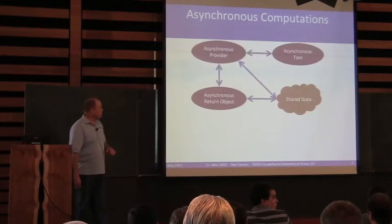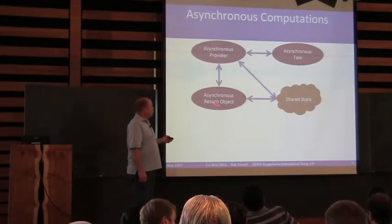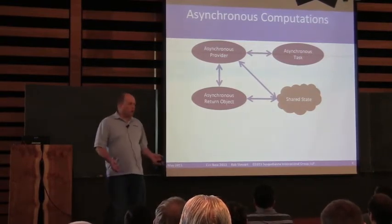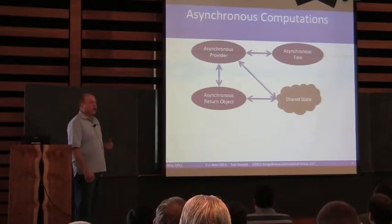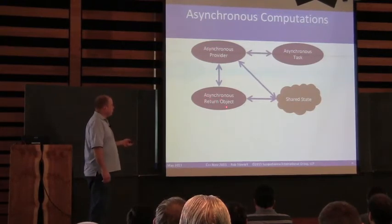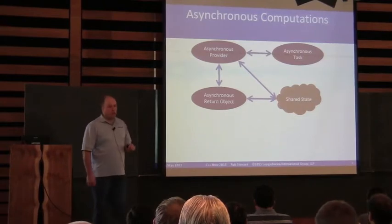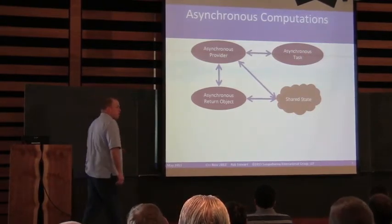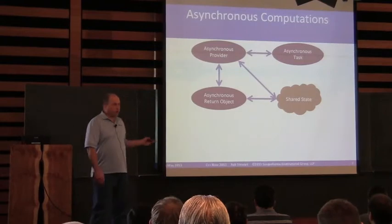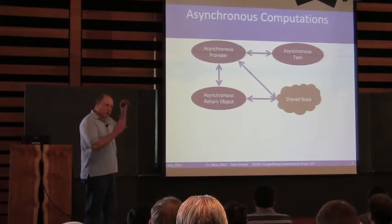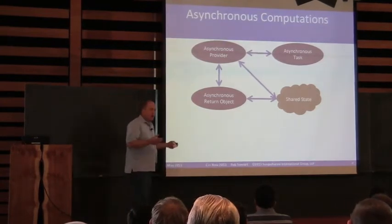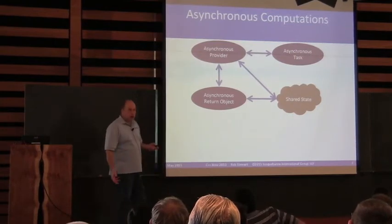We'll start with asynchronous computations. The standard has several new terms here, but it all has to do with your asynchronous task. You want a callable of some sort — a function, object, whatever — you want that to run asynchronously. To do that, we have asynchronous providers, asynchronous return objects, and a somewhat nebulous concept called a shared state. The asynchronous provider's job is to run the asynchronous task for you and communicate status back through the asynchronous return object. Shared state is just something they use to implement some of that — that's where some of the information is stored.